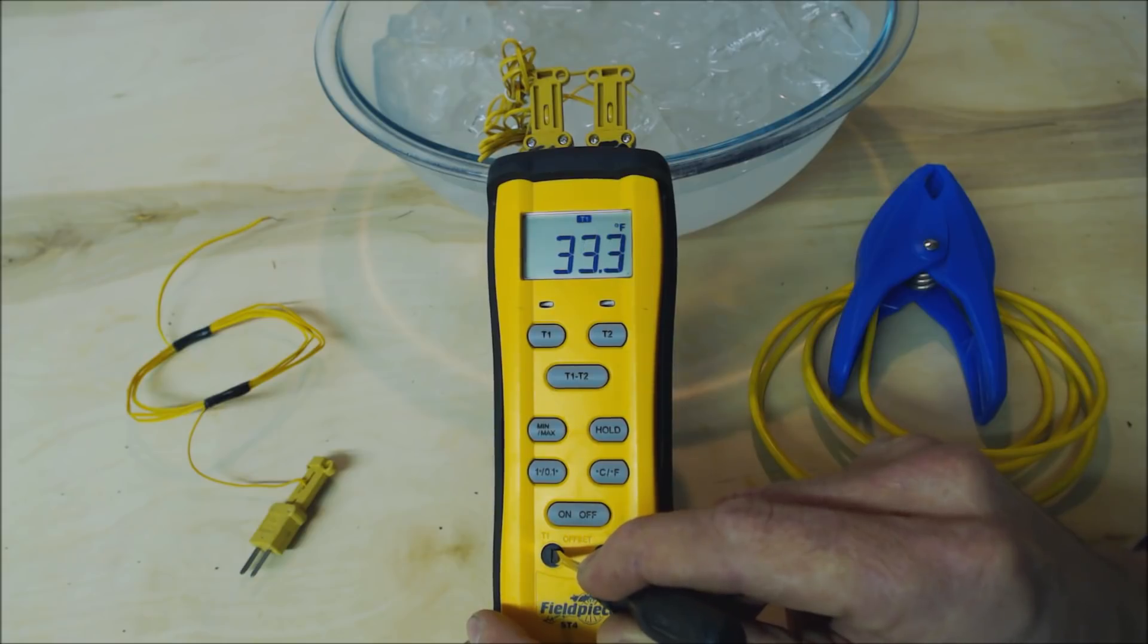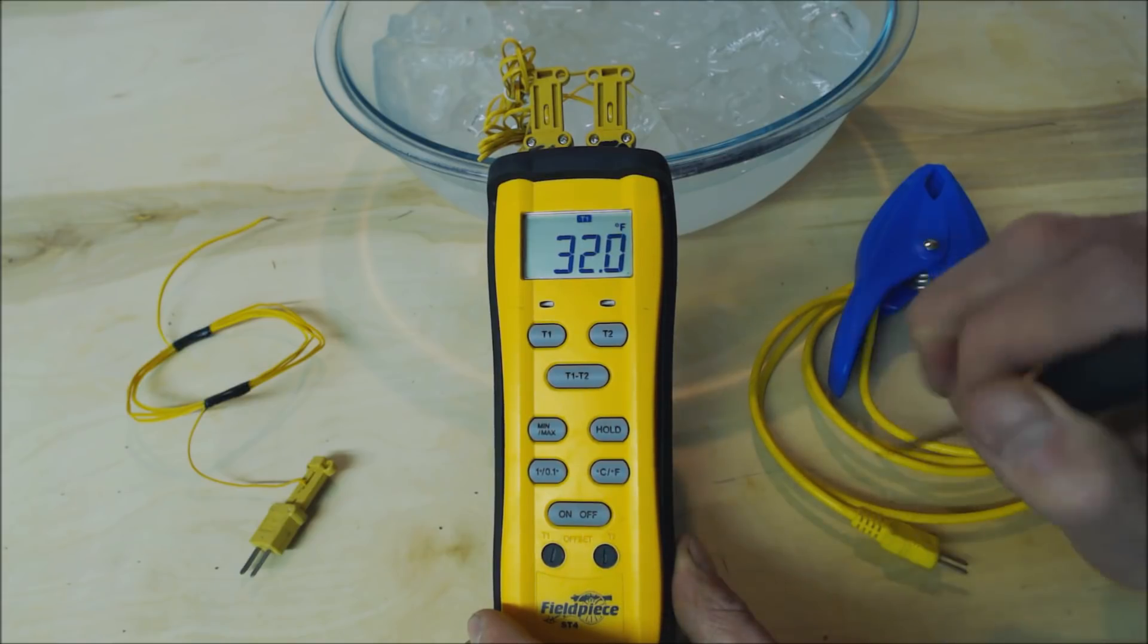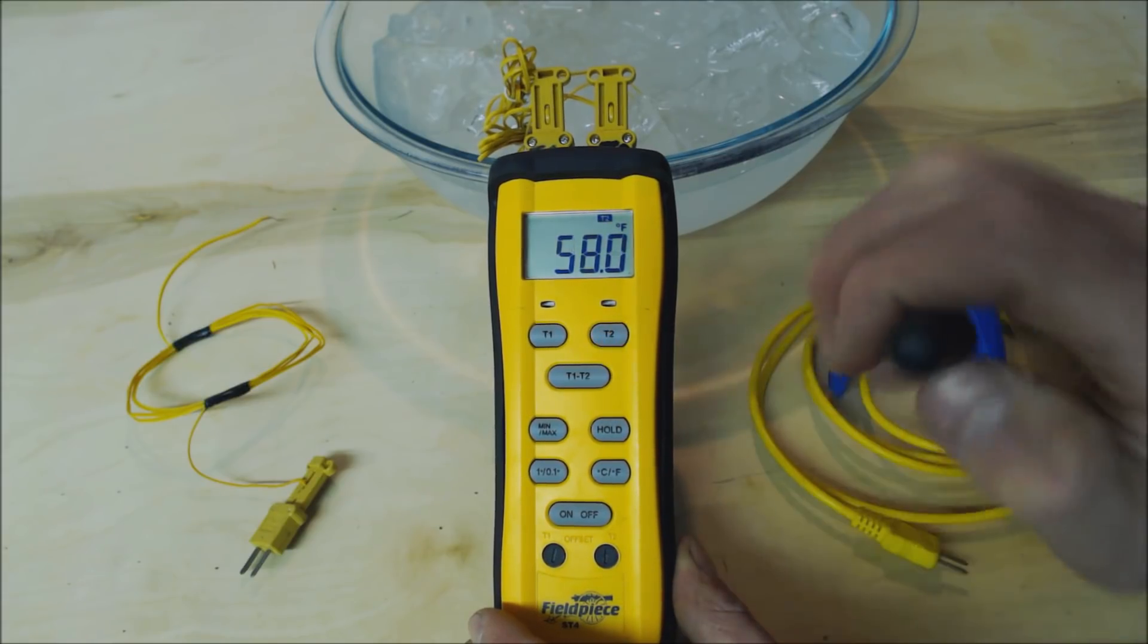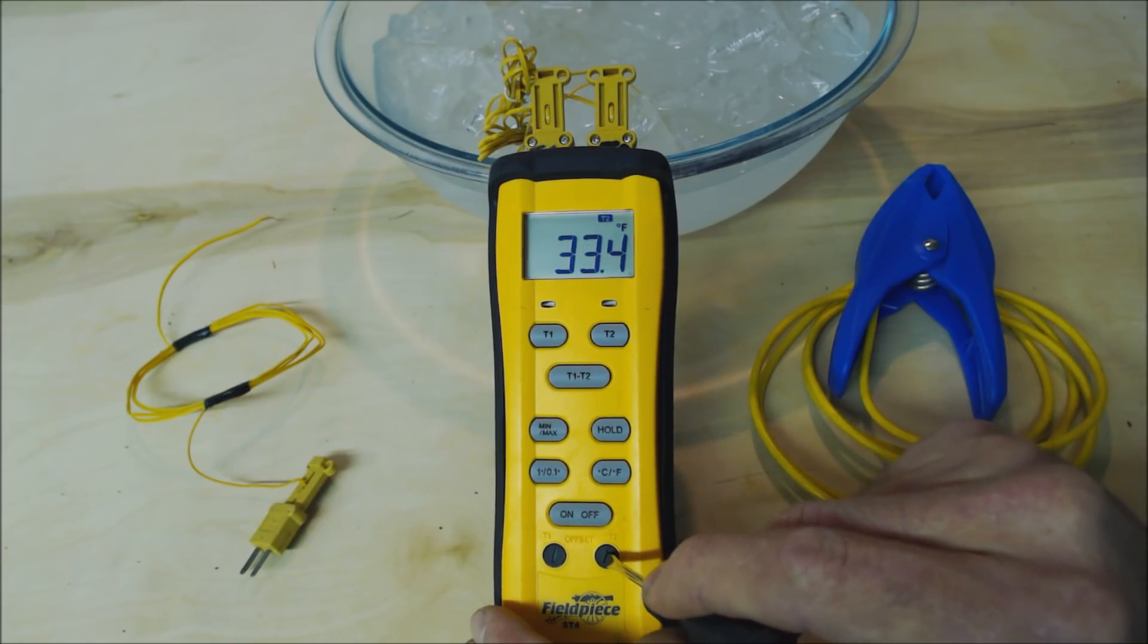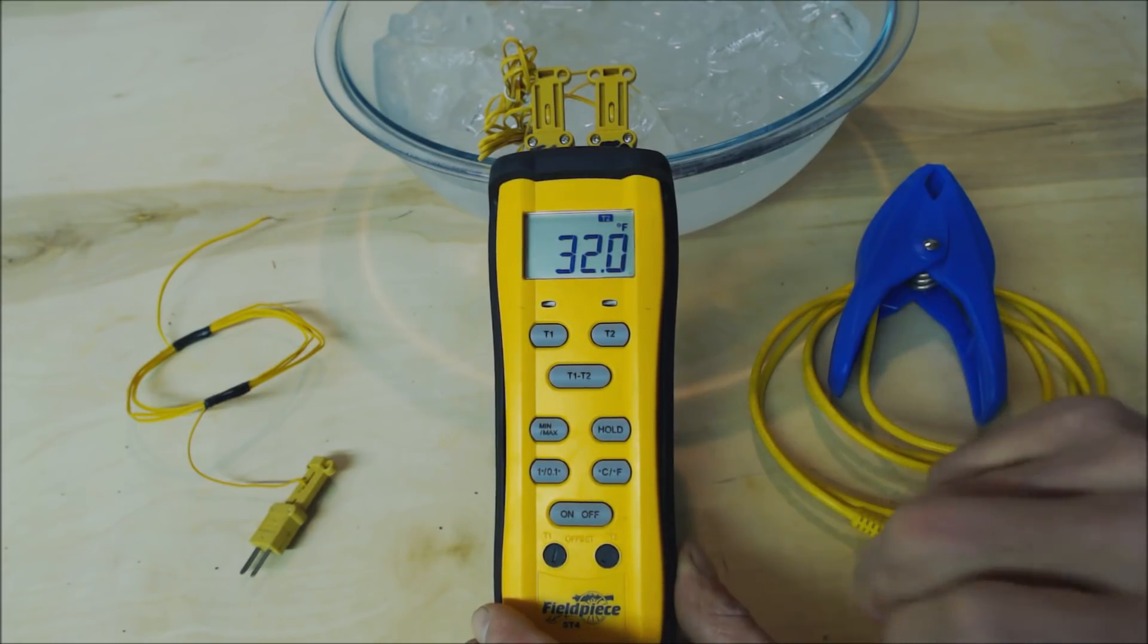We're going to turn this clockwise until we get down to 32 degrees. There you go. Now we're going to go over to T2 and we're going to turn that one clockwise as well. It's just a little at a time. It doesn't need a whole lot. So now we're at 32 degrees.